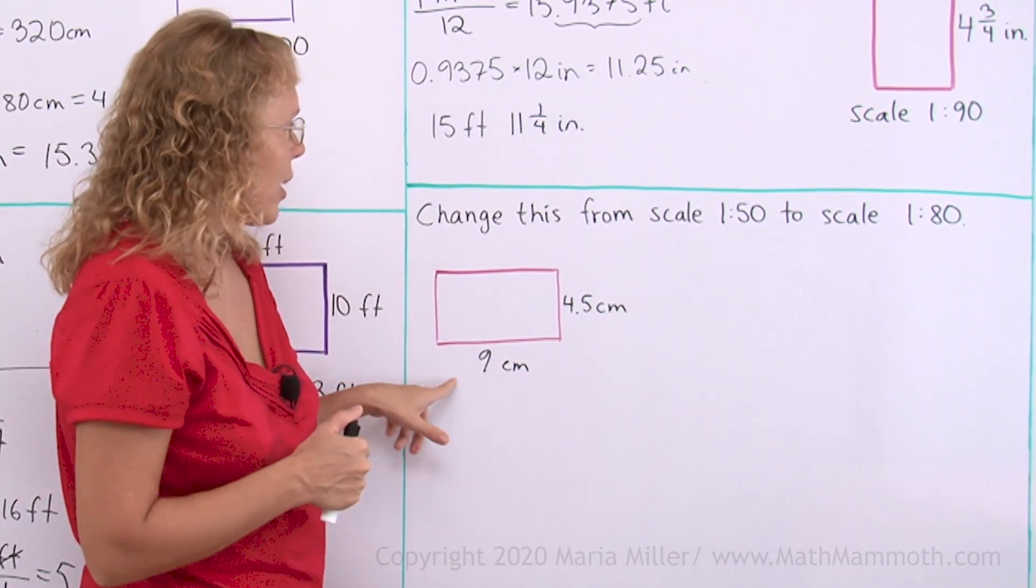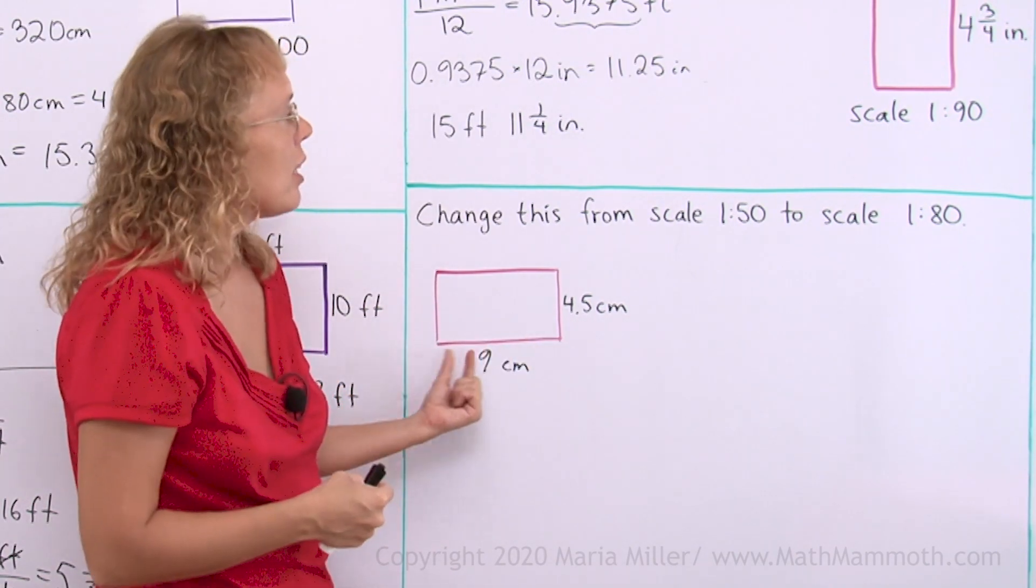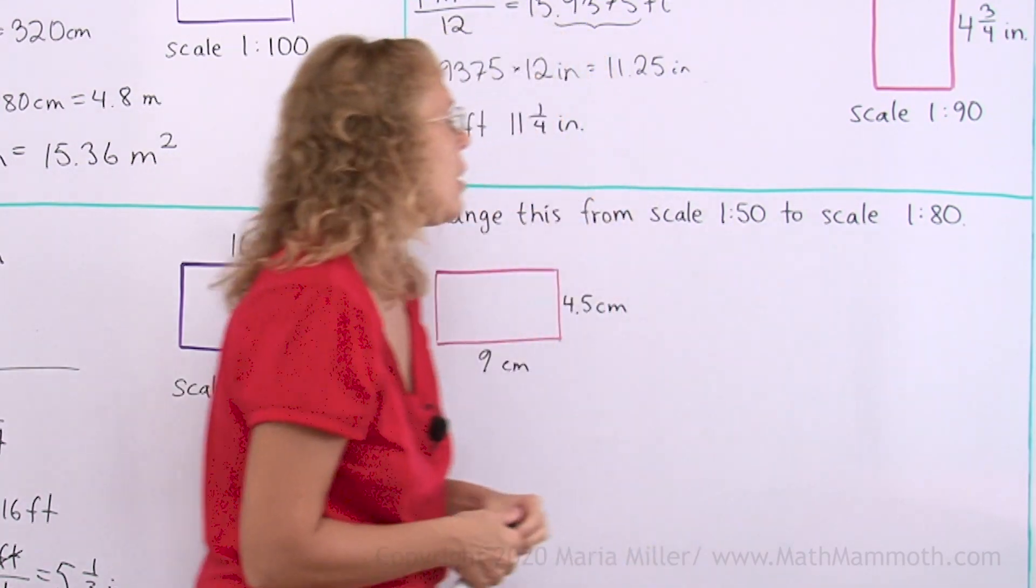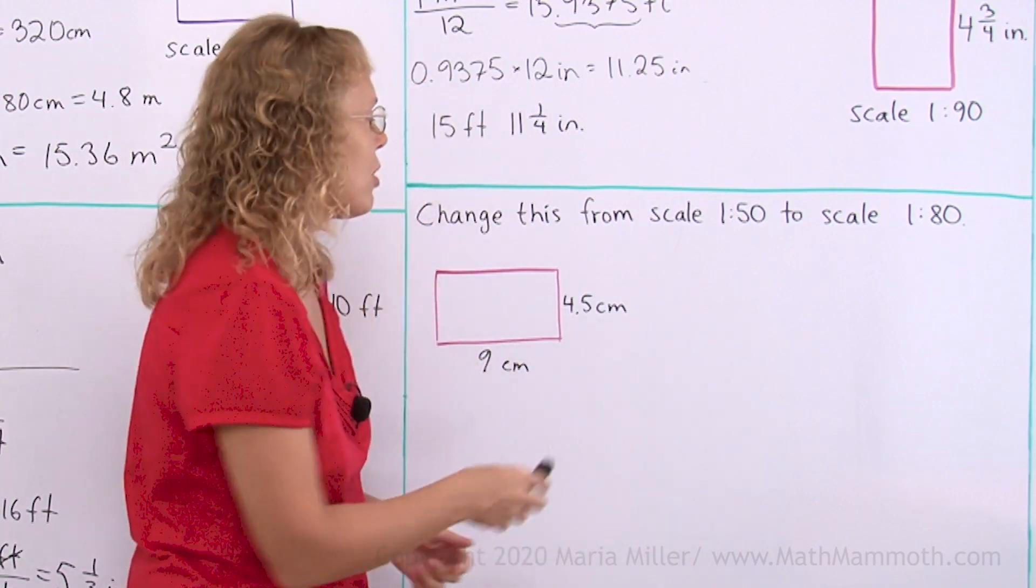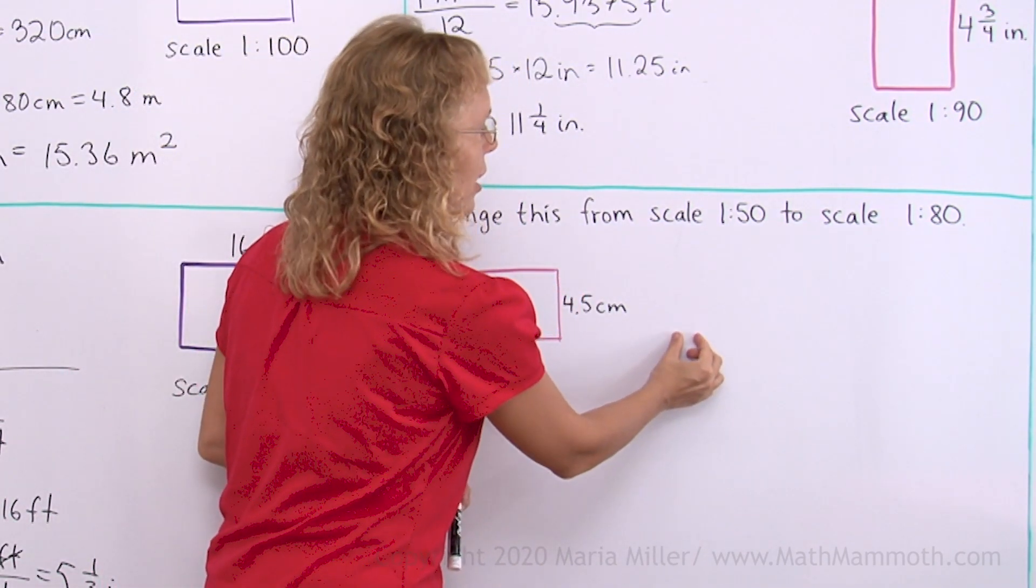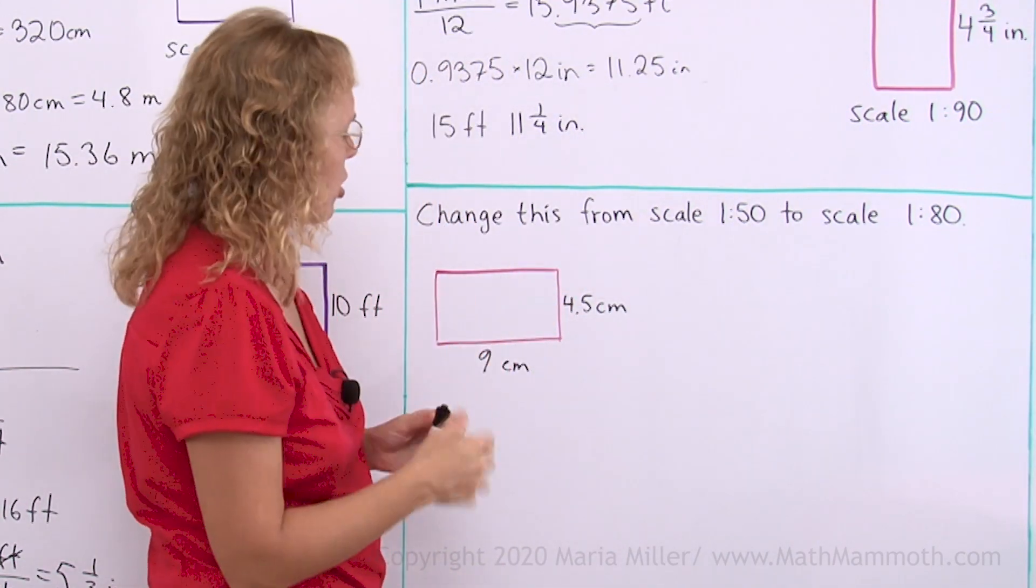This is where one unit here corresponds with 50 units in reality. And over here, one unit corresponds with 80 units in reality. And it means this will be smaller. When we draw it on paper, it will be smaller, because each unit here will get multiplied by 80 to produce the actual dimensions of the room.